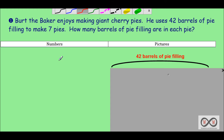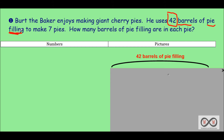Second sentence: 'He uses 42 barrels of pie filling to make seven pies.' We've got a couple different bits of information. We have 42 barrels of pie filling — that's one of our known bits of information. And he uses 42 barrels of pie filling to make seven pies. There's another bit of information: 42 barrels to make seven pies.